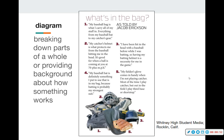A diagram breaks down parts of a whole or provides background about how something works. For example, describing what's inside somebody's baseball bag — unless you're a truly amazing writer, that's going to be really boring to read. It's better to see it broken down visually, with the person quoted explaining not only what each item is but why they have it. There might be a story behind that specific helmet or baseball bat, so it's important to chunk that information for readers to digest.